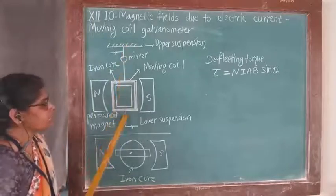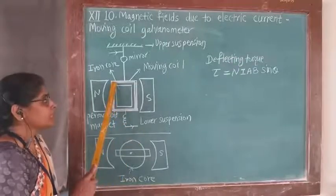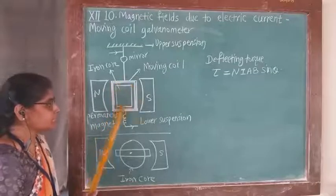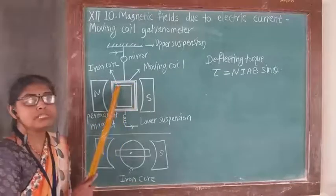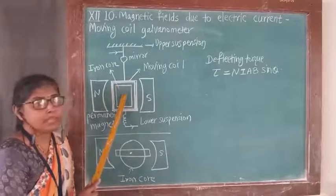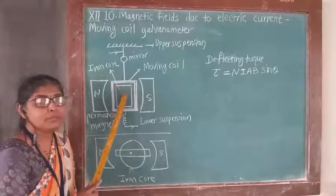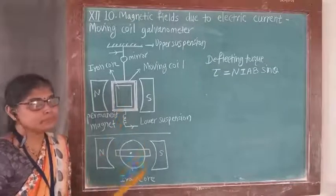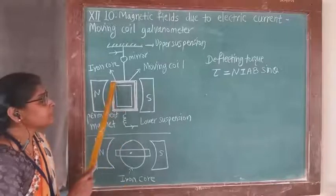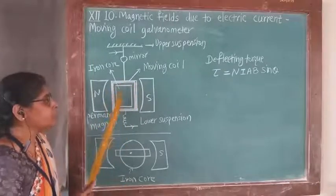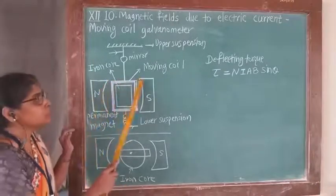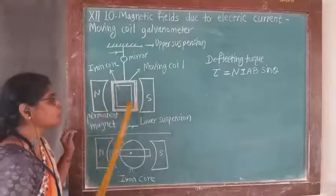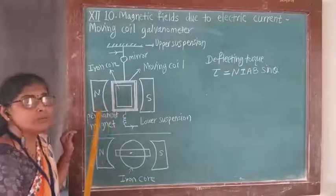At the lower end there is a helical spring — this is the upper suspension and this is the lower suspension. This current-carrying coil, or moving coil, is placed on a soft iron core. The iron core has a function: it makes the field radial and also strong. The moving coil and iron core are placed into concave-shaped pole pieces of a horseshoe magnet, which is strong and also permanent.